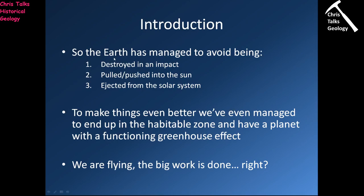The Earth has managed to avoid being destroyed by an impact, pulled or pushed into the Sun, or ejected altogether from our solar system. By the end of the accretionary phase of planet growth, the Earth had done pretty well. We actually somehow managed to end up in the habitable zone — the zone within which liquid water can survive on a planet's surface — and we ended up with a planet that had a functioning greenhouse effect.